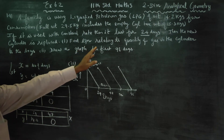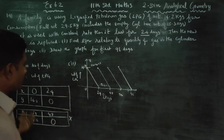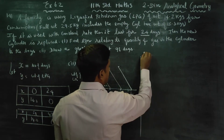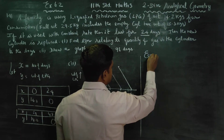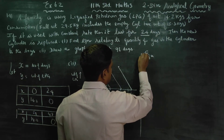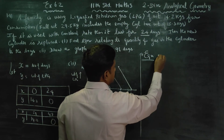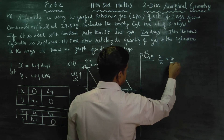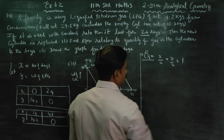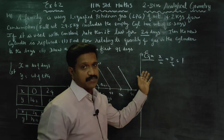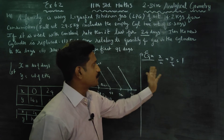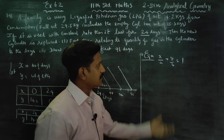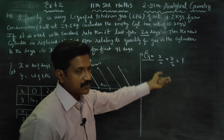Now, find the equation relating to the quantity of gas. Using the intercept formula: x/a + y/b = 1, where a is the x-intercept and b is the y-intercept. Use this intercept formula to derive the equation.